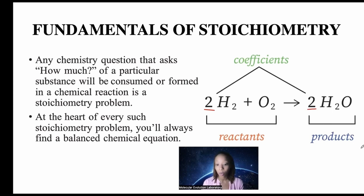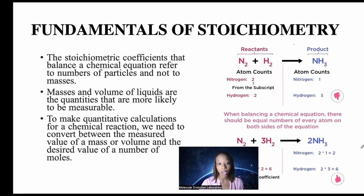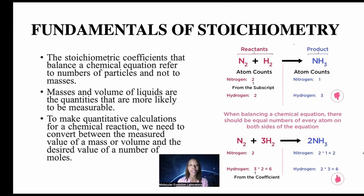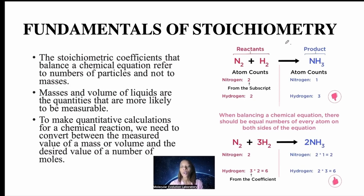Any chemistry question that asks how much of a particular substance will be consumed or formed in a chemical reaction is a stoichiometry problem. At the heart of every such problem, you'll always find a balanced equation — the first step is always to balance it. The stoichiometric coefficients refer to the number of particles, not mass. To make quantitative calculations, we need to convert between measured values of mass or volume and the desired number of moles.